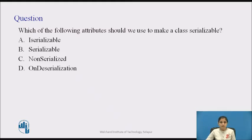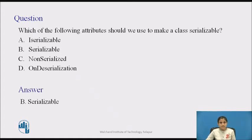Now pause the video and find the answer. Which of the following attributes should we use to make a class serializable? A. ISerializable. B. Serializable. C. NonSerialized. D. OnDeserialization. The answer is B. Serializable.